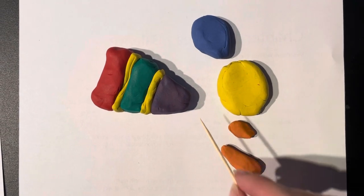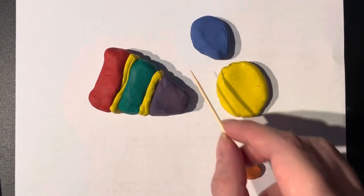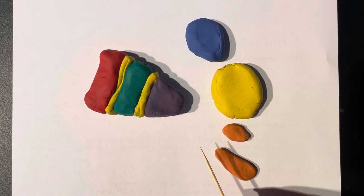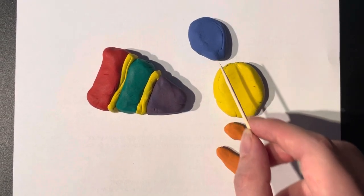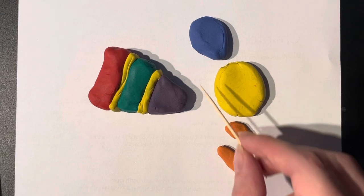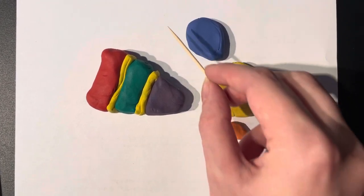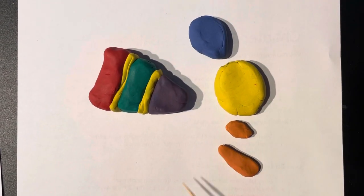Running between all of this is the internal capsule. It's a sheet of fibers running between the lenticular nucleus, the head of the caudate nucleus, and the thalamus. It has an anterior limb and a posterior limb.